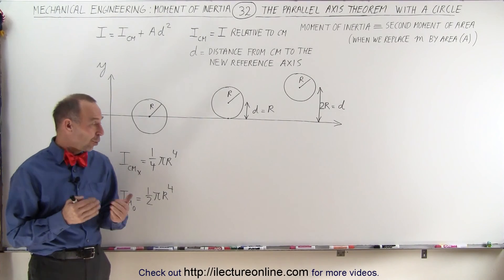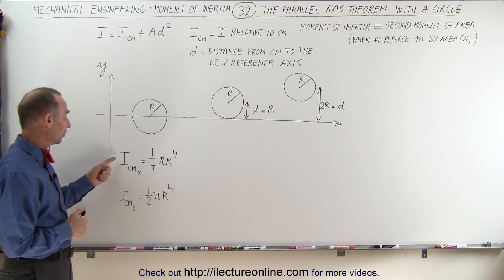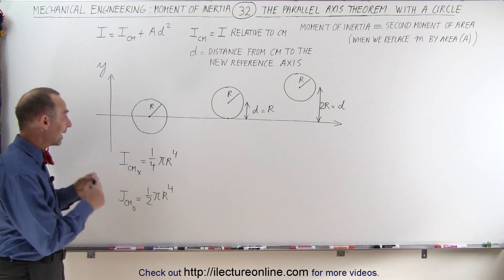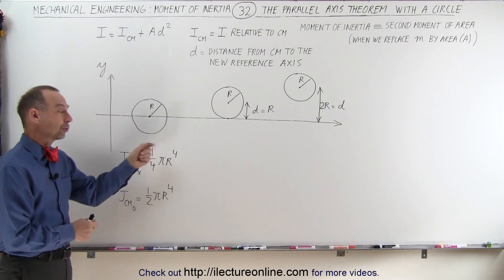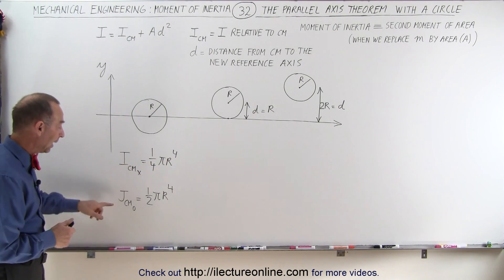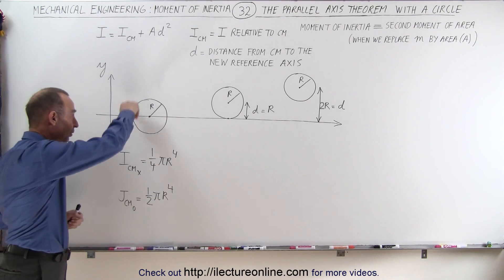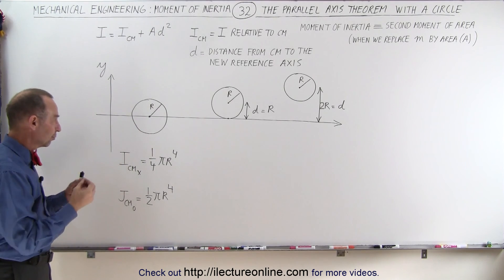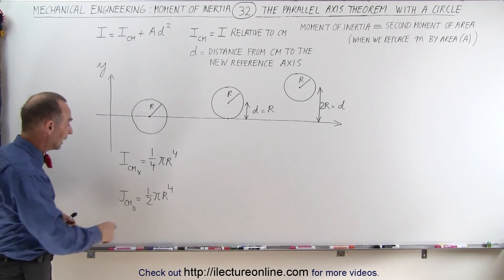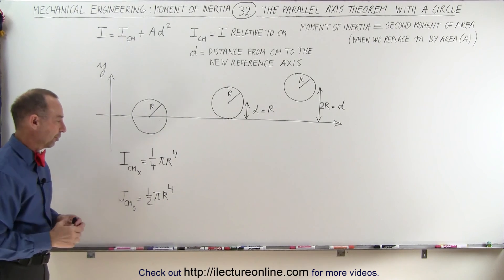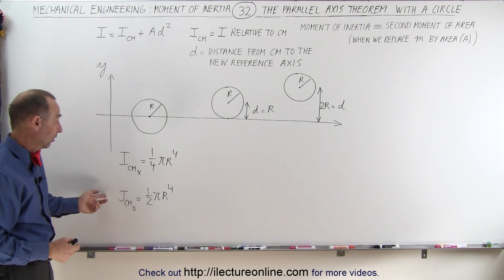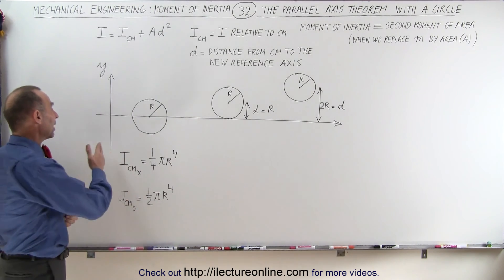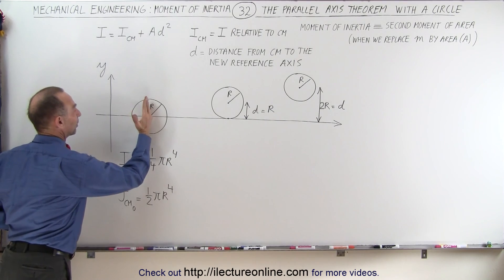Welcome to ElectronLine. Knowing that the moment of inertia relative to the x-axis for a circle that has its center mass right on the x-axis is equal to one-quarter pi r to the fourth power, and the moment of inertia of the circle rotating about its center of mass placed at the origin is equal to one-half pi r to the fourth — exactly double, because this is the sum of the moment of inertia relative to the x-axis and the moment of inertia relative to the y-axis.